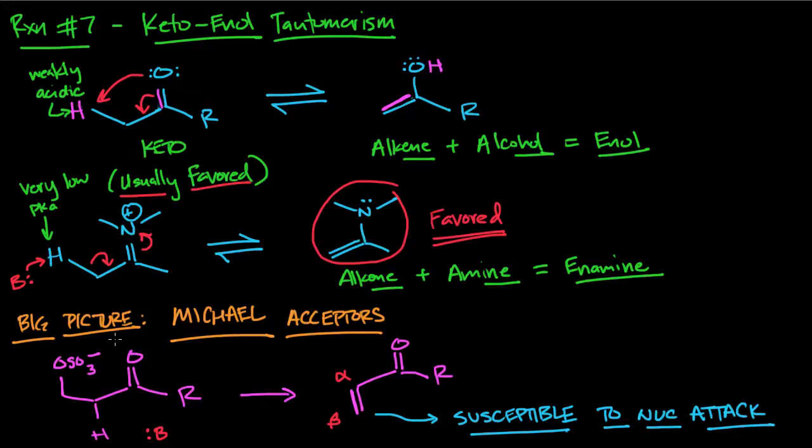A Michael acceptor has an alpha-beta unsaturated or alpha-beta double bond next to the ketone. If you have this weakly acidic H, the H can go here, push these electrons there, and this leaving group leaves to generate a Michael acceptor. These are susceptible to nucleophilic attack - glutathione, DNA, or other nucleophiles can attack here.